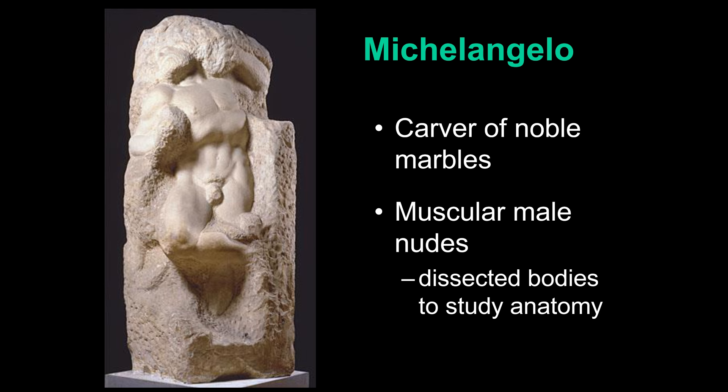Like Leonardo, he dissected bodies in order to study anatomy, but the purpose of his interest was a bit different — it was to improve his art, to show accurately the human body. He probably wasn't particularly interested in something like the circulation of the blood, because that's probably not going to affect his stone carving.